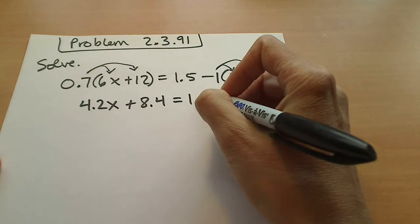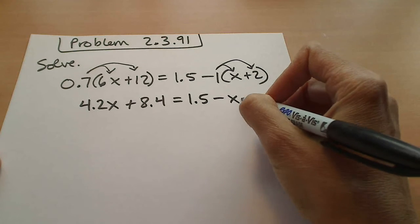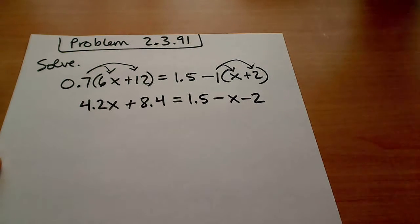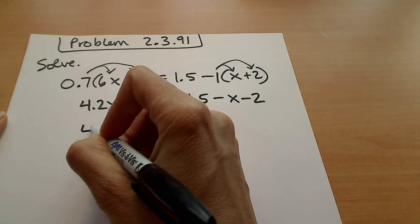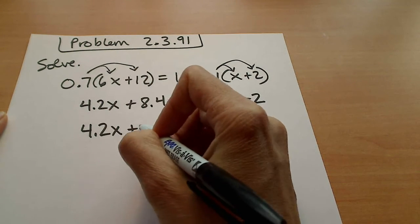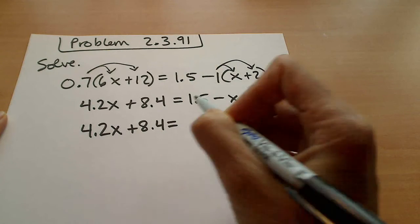And we want to go ahead and collect like terms on the right side now. When we do that, this is 4.2x plus 8.4 equal to the 1.5 and the negative 2 would be a negative 0.5 minus the x.